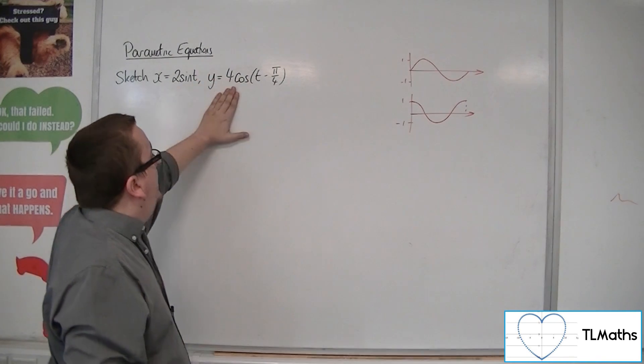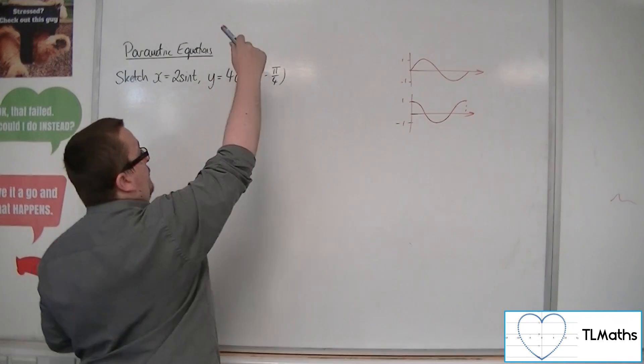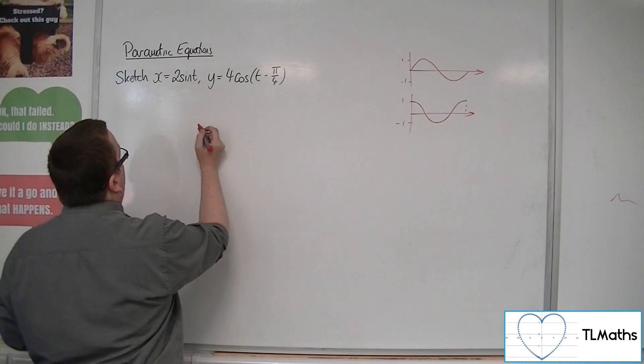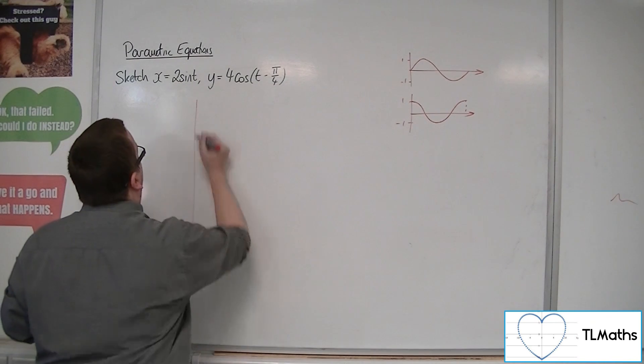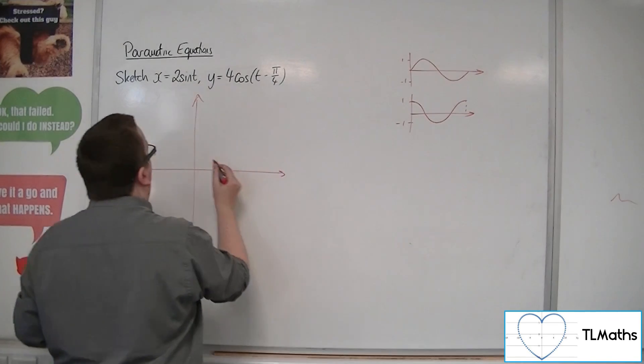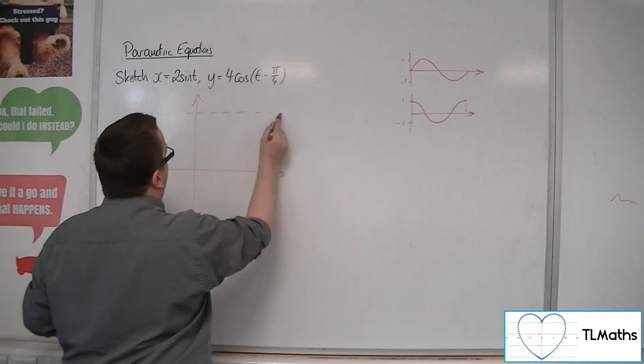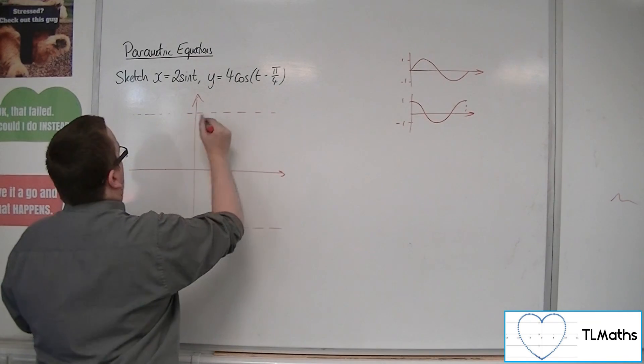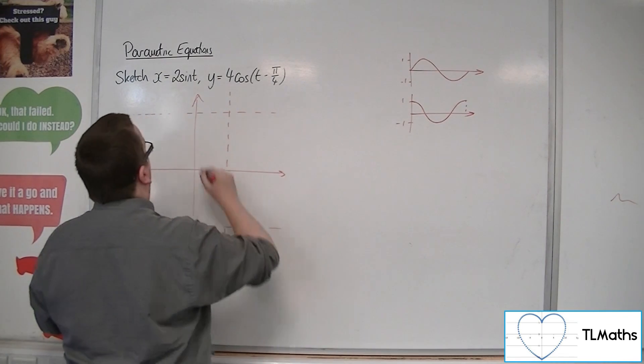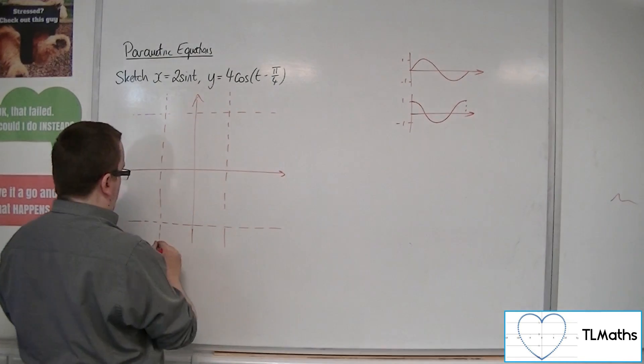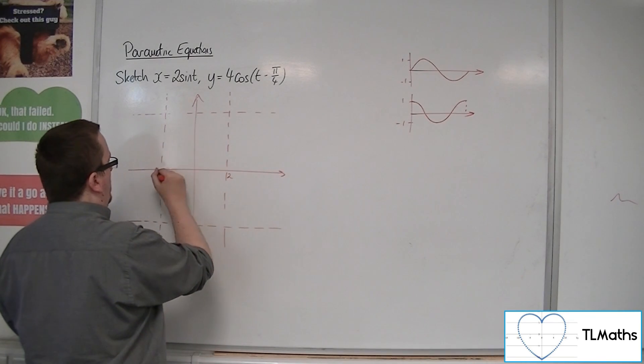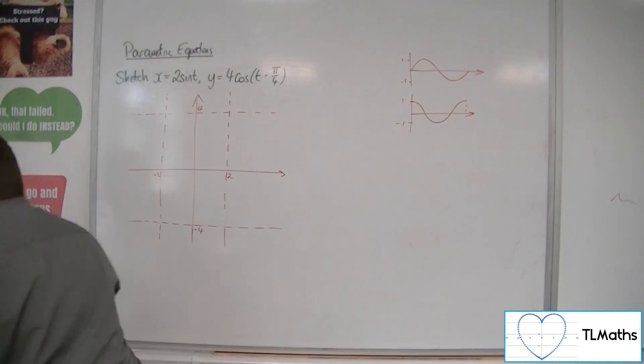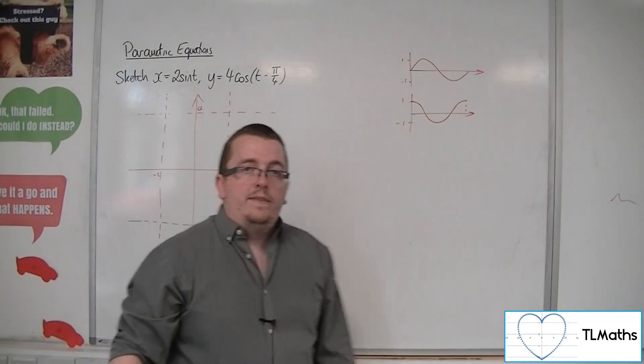means that this whole curve can't go above 4 or below minus 4. And so what you can think of is that this curve is kind of trapped in a box. So if I try and do something like this, here's your 2 and minus 2, here's 4 and minus 4. And so the curve that we're looking at is trapped in that box.